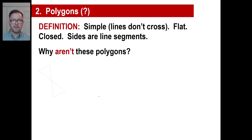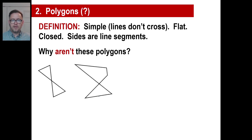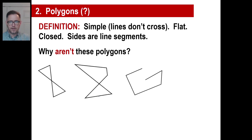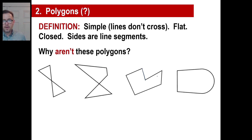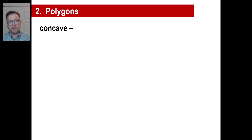Why aren't these polygons? Why isn't that one a polygon? Because it crosses. How about this one? Same thing. Why is this not a polygon? It would be if these lines were attached, but they aren't so it's not. This is not a polygon because that right side is not a line segment — it's a curve.